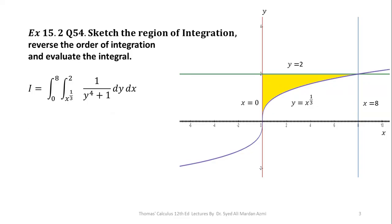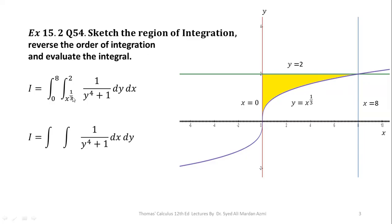In the next part, we will learn how to reverse the order of integration. Reversal of order of integration means interchanging the inner and outer variables. When we interchange them, we cannot simply switch the limits, because limits of the outer variable are always constant, whereas limits of the inner variable may be constant or variable. So we need new limits obtained from the region.